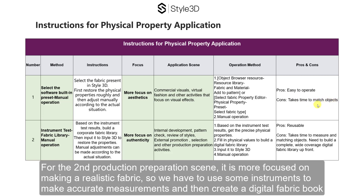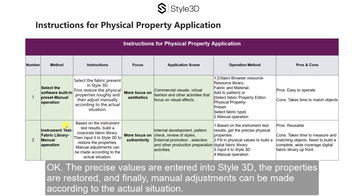For the second production preparation scene, it is more focused on making a realistic fabric. So we have to use some instruments to make accurate measurements and then create a digital fabric book or digital fabric library. The precise values are entered into Style 3D, the properties are restored, and finally, manual adjustments can be made according to the actual situation.